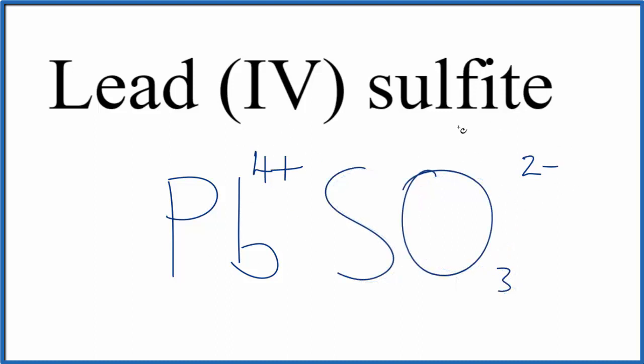Lead's a metal. Then we have this group of non-metals. It's an ionic compound and these have to balance out. Right now we have the 4+ on the lead, the sulfite, the whole thing here is 2-.